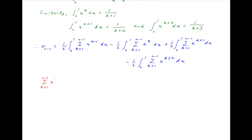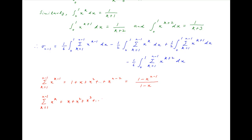The summation Σ_{k=1}^{n−1} x^(k−1) expands as 1 + x + x² + … + x^(n−2), a geometric progression with common ratio x that sums to (1 − x^(n−1))/(1 − x). Similarly, Σ_{k=1}^{n−1} x^k equals x + x² + … + x^(n−1), which sums to x·(1 − x^(n−1))/(1 − x).